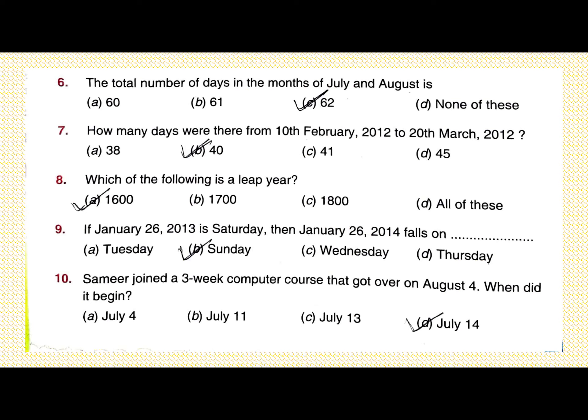Question number 10: Samir joined a three-week computer course that got over on August 4. When did it begin? Three weeks means 21 days back. Counting back: 4 days of August and the remaining 17 days of July means it started on July 14.